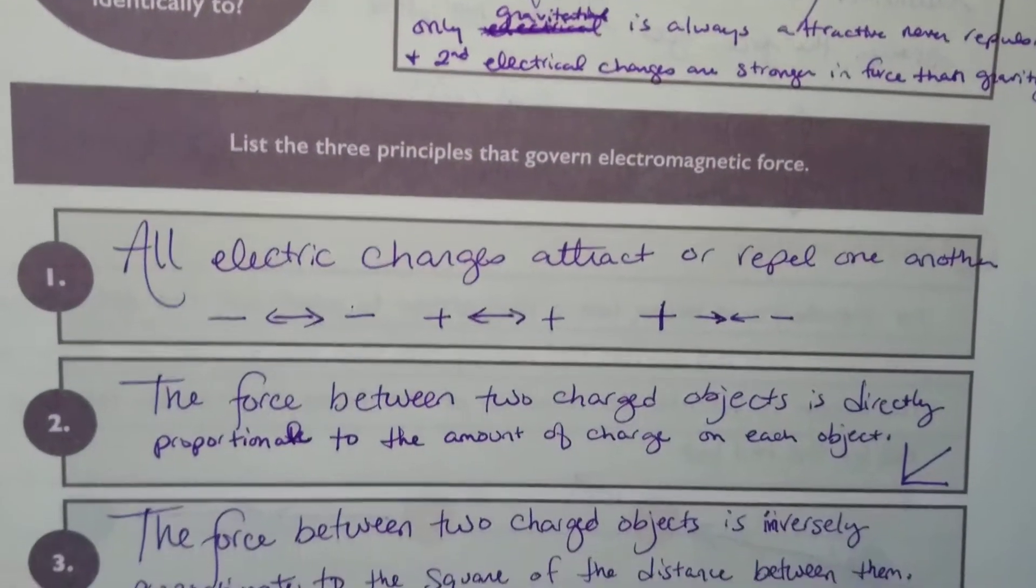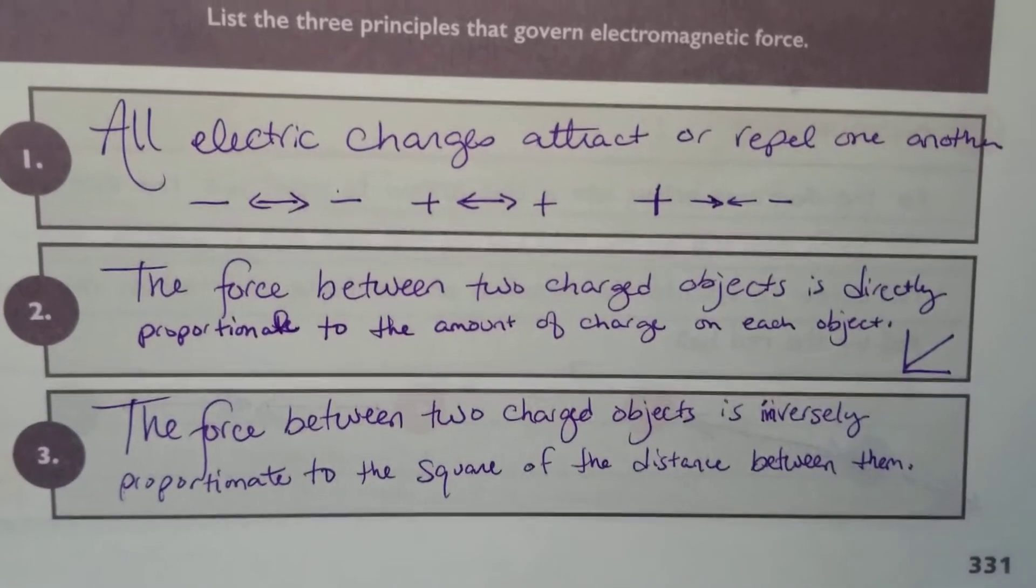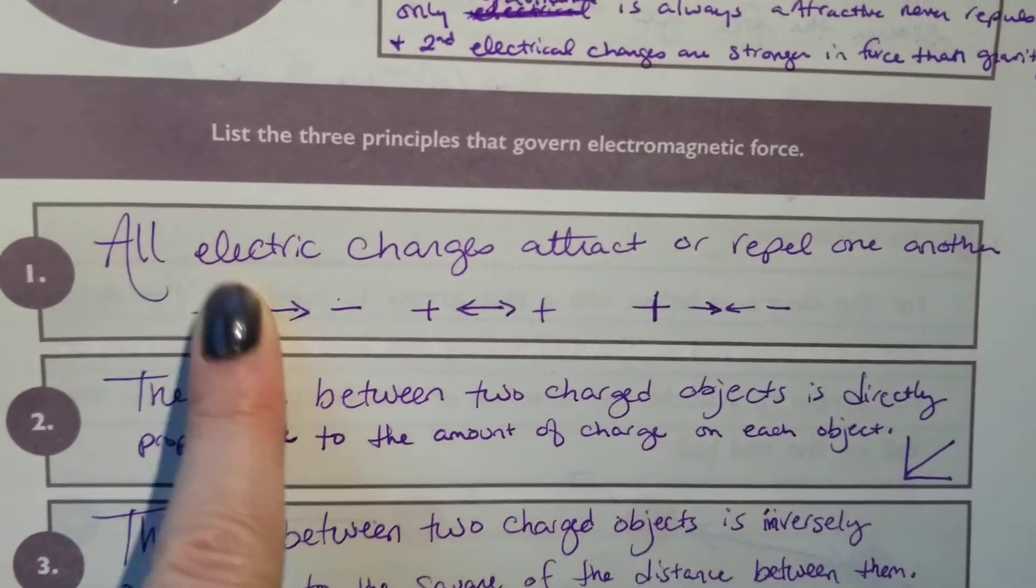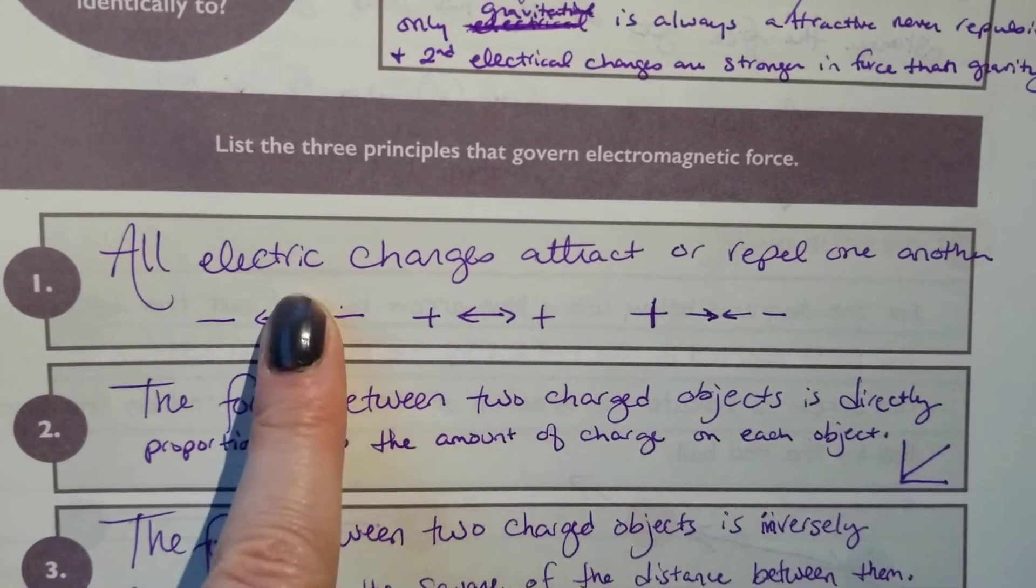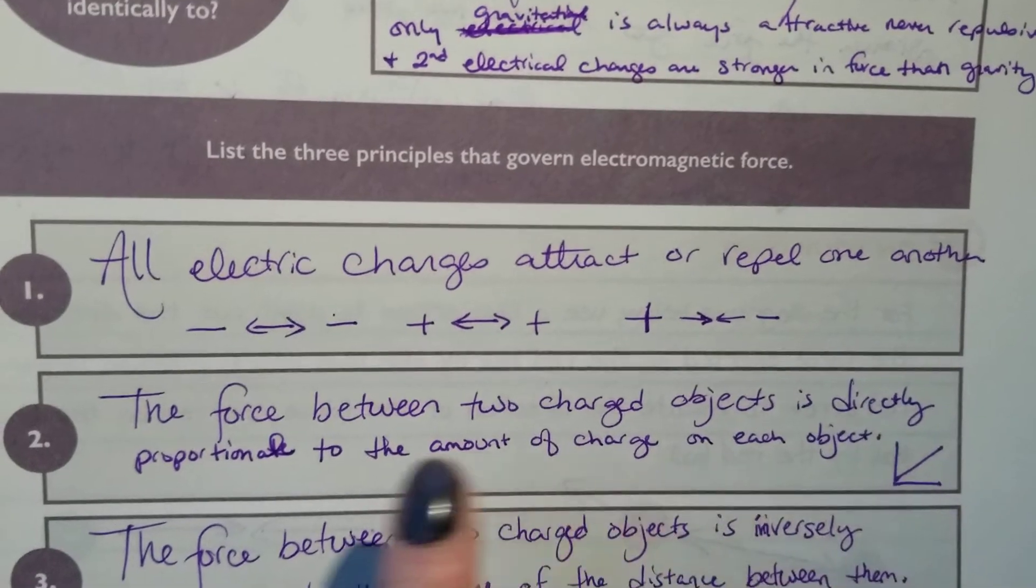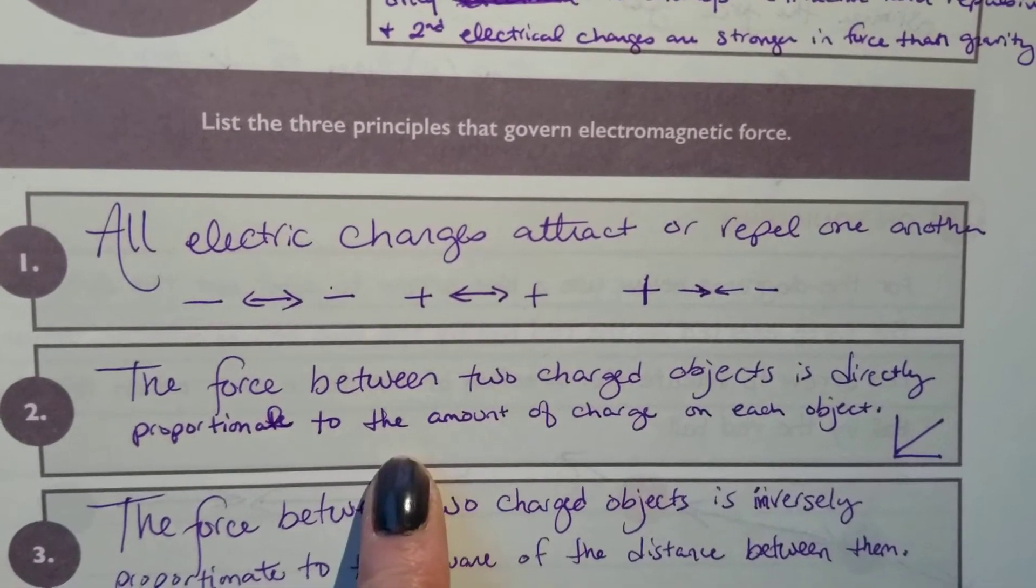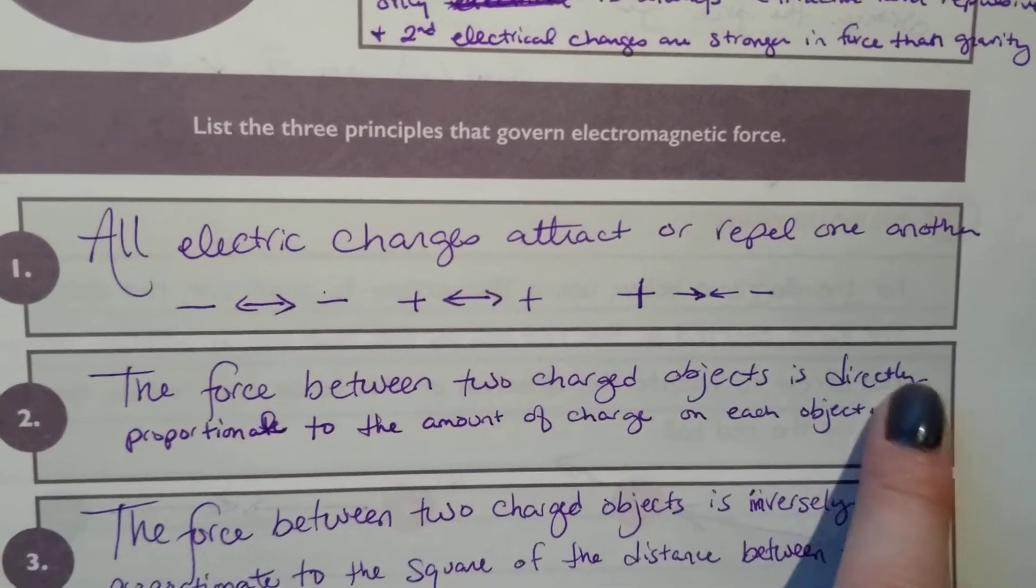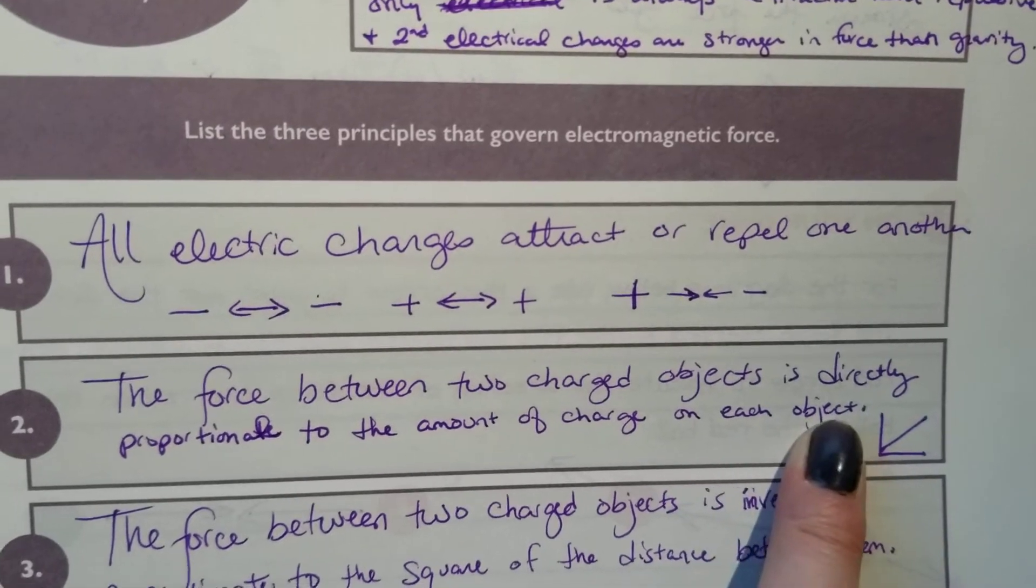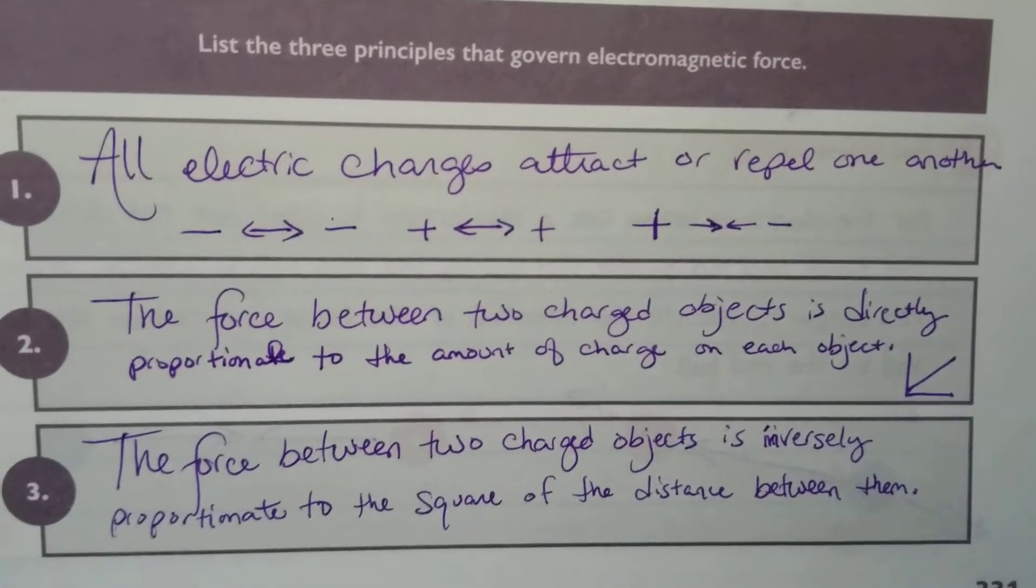Three principles that govern electromagnetic force. These must be important. Anytime they have three principles or two principles, highlight that. These are important, you want to know these. All electric charges attract or repel one another. The force between two charged objects is directly proportional to the amount of charge on each object. So as one goes up, the other one goes up too.